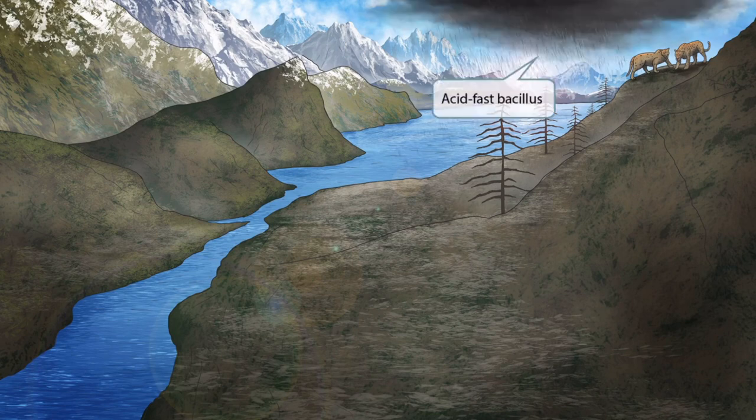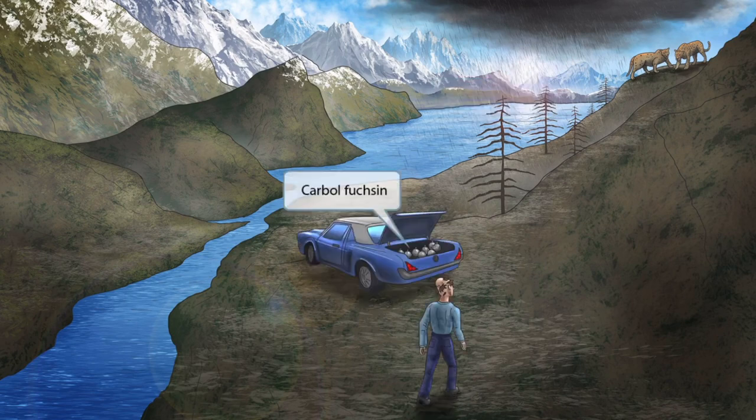To help you remember that this is an acid-fast organism, we've shown this scene occurring in an area affected by acid rain. Notice that we've included a gross, dark rain cloud that has clearly destroyed the trees below it. So acid rain for acid-fast bacillus.